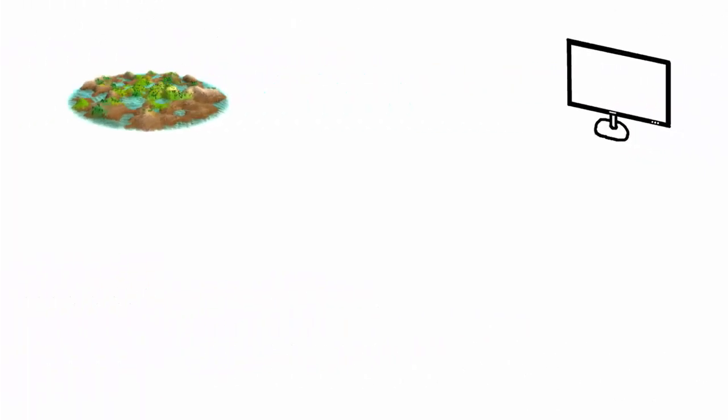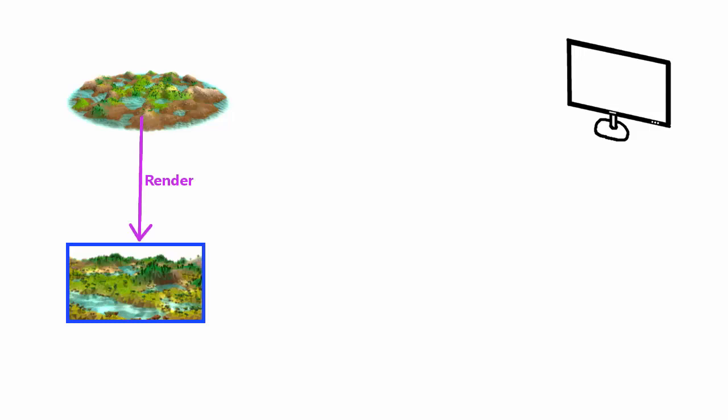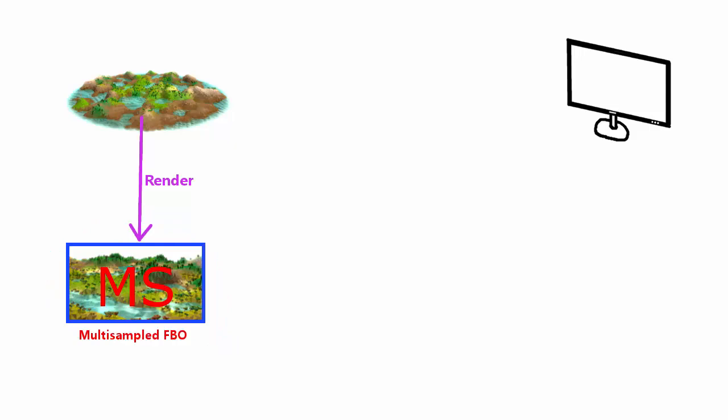This will give us a multisampled FBO that we can render our scene to, and once we've done that, the FBO will contain a multisampled image of the scene with multiple samples per pixel. However, we can't really use this data yet because this isn't a normal FBO — it has multiple samples per pixel — and the multisampled FBO needs to be resolved first before we can use it.